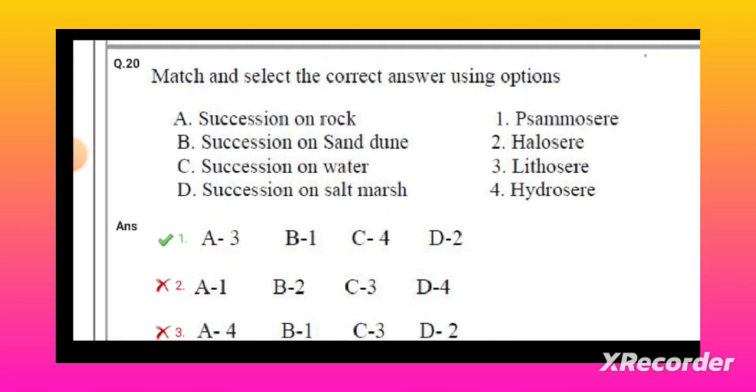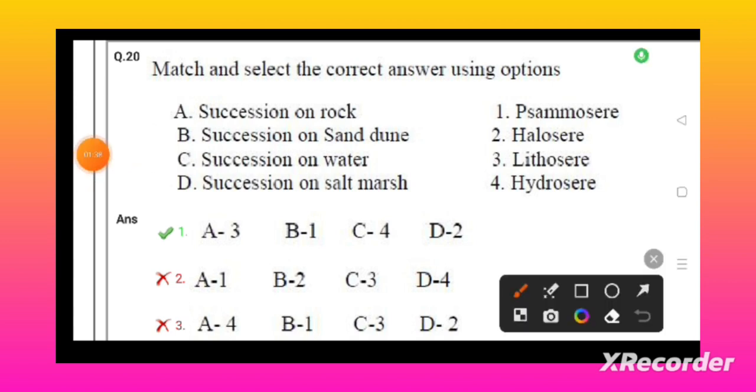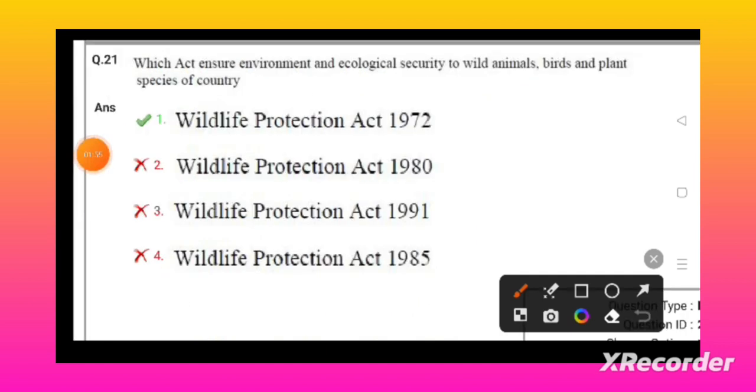In this he asked the matching. Succession that occurs in the rock is known as lithosere. The succession that occurs in the sand dune is known as psammosere. The succession that occurs in the water is known as hydrosere. The succession that occurs in the salt marsh is known as halosere. These are most important, we have to remember all these.